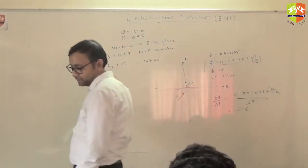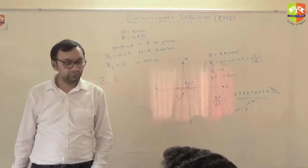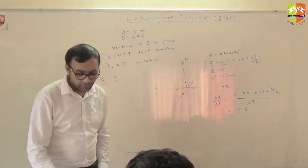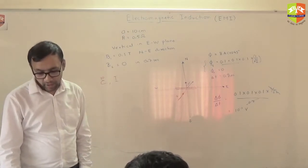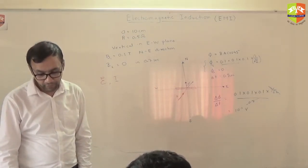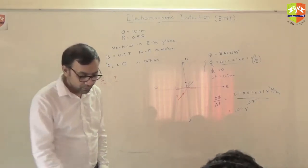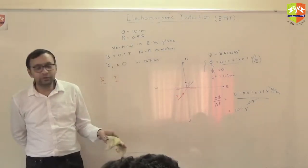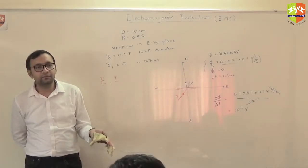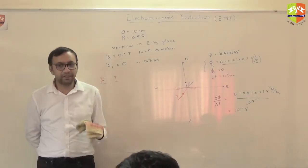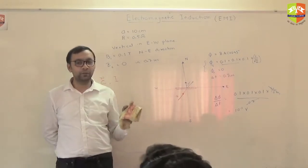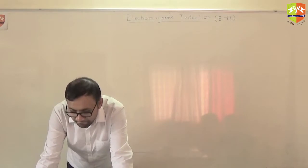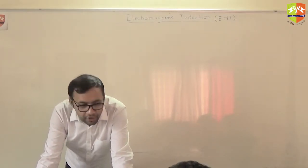That is 2 into 10 to the power minus 3, and root 3 value is 0.866. Root 3 is something people sometimes don't even remember, because values are given like delta t is 1.732 but it won't strike you that if root 3 is coming in the denominator it will cancel. Next question — no breaks today.